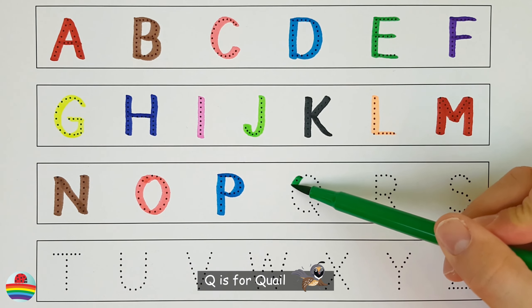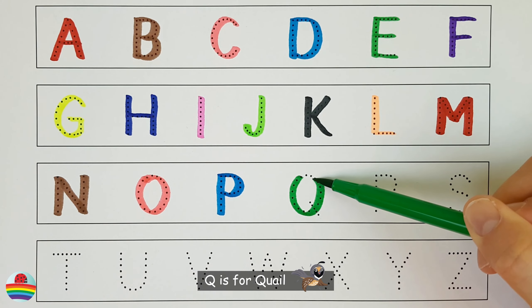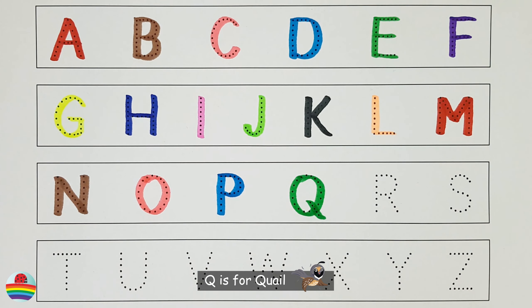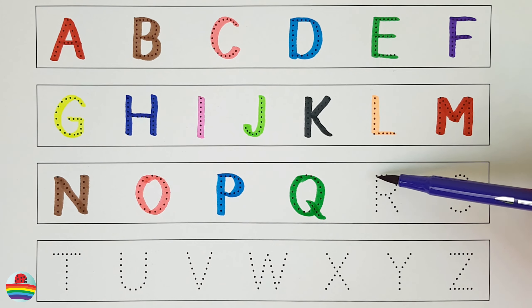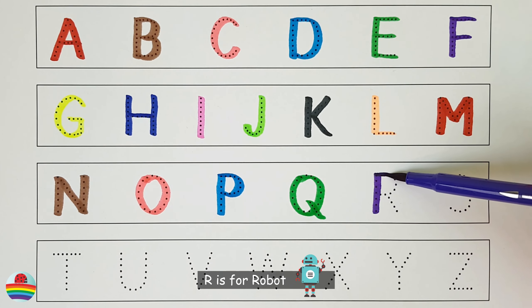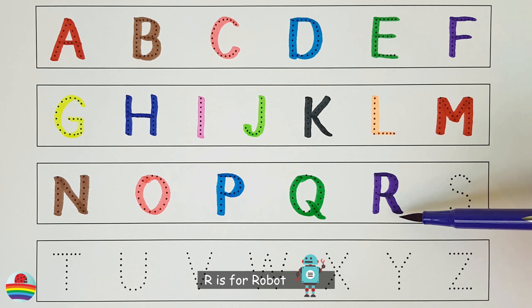Q. Q is for Quail. Q. R. R is for Robot. R.